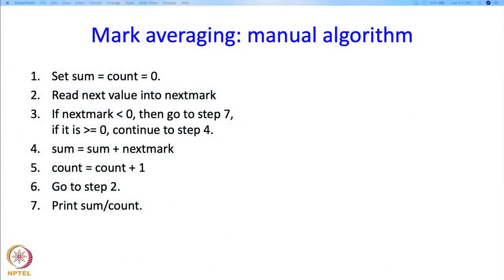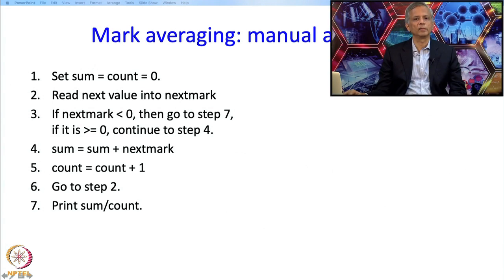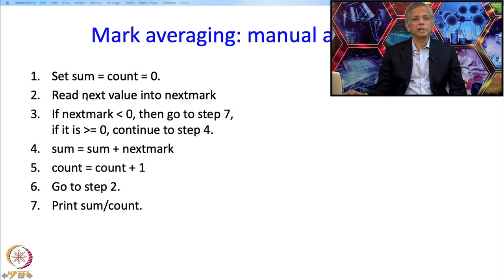Let us begin with the manual algorithm for mark averaging. We are going to keep two variables: one is the variable sum, into which we are going to get the sum of all the marks, and then there is a variable called count, in which we are going to keep track of how many marks we have read.